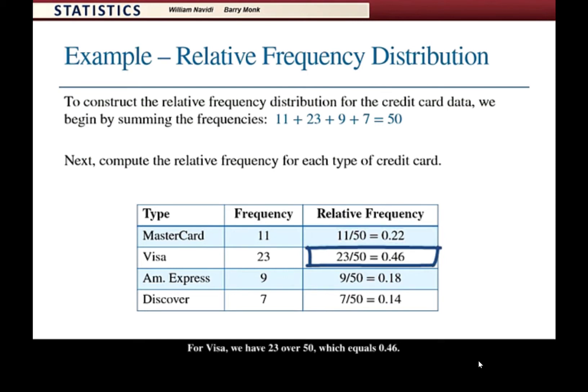For Visa, 23 over 50 equals 0.46. For American Express, 9 over 50 equals 0.18. For Discover, 7 over 50 equals 0.14.